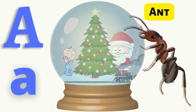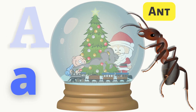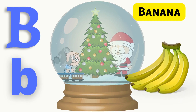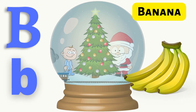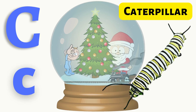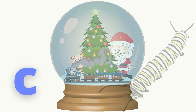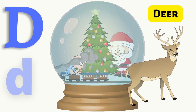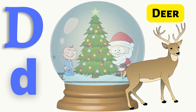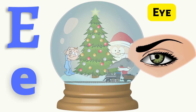A for Anne. B for Banana. C for Caterpillar. D for Deer. E for Eye.